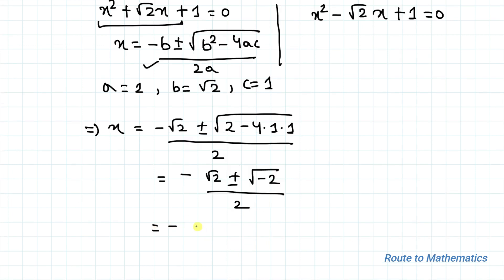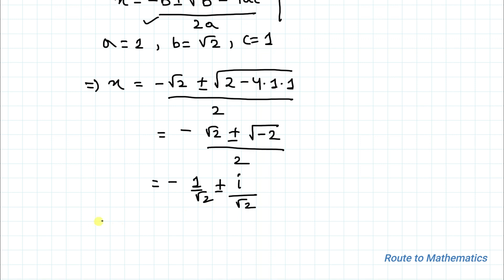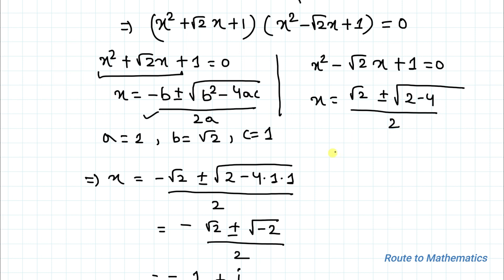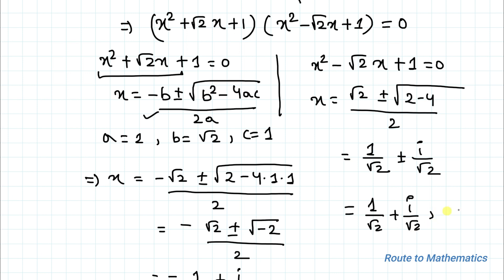This simplifies to x equals minus 1 by root 2 plus or minus i by root 2, giving two solutions: minus 1 by root 2 plus i by root 2, and minus 1 by root 2 minus i by root 2. For the second quadratic equation, x equals 1 by root 2 plus or minus i by root 2, giving solutions x equals 1 by root 2 plus i by root 2, and 1 by root 2 minus i by root 2.